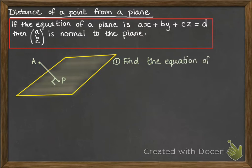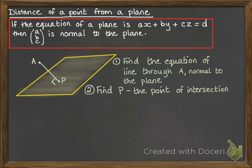So, first of all, we'll need to find the equation of the line through A, and that is normal to the plane. Then we'll find what P is, so the point where that line intersects with the plane. And then once we've got A and P, we can calculate the distance between them.